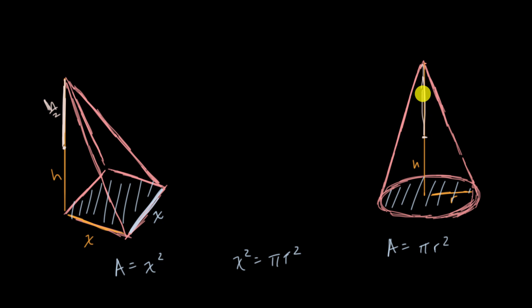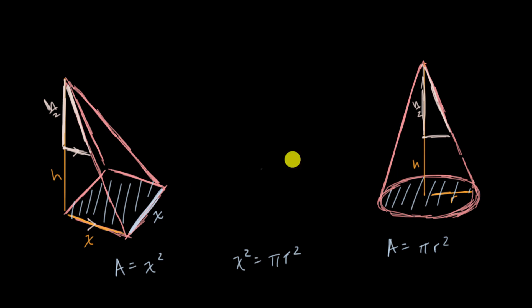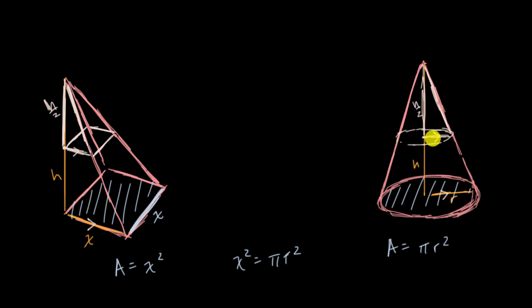This distance right over here would be h over two, and the whole height is h. What we can do is construct similar triangles — and we can even prove it to ourselves that these are similar triangles. The reason we know they're similar is that the cross-sectional line is parallel to the base line, and similarly the radius line at the cross-section is parallel to the base radius, because we're taking cross-sectional areas that are parallel to the base.